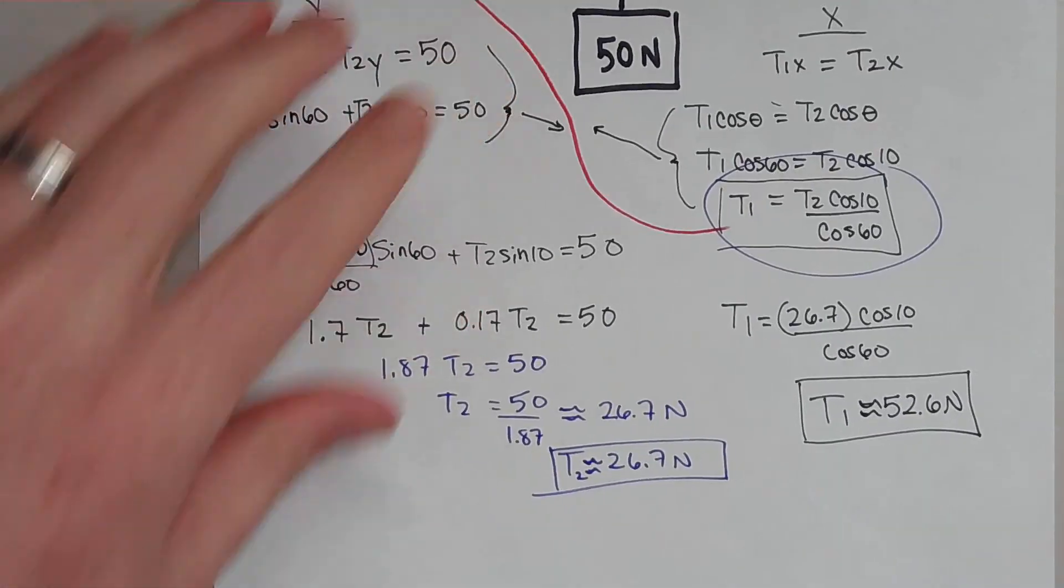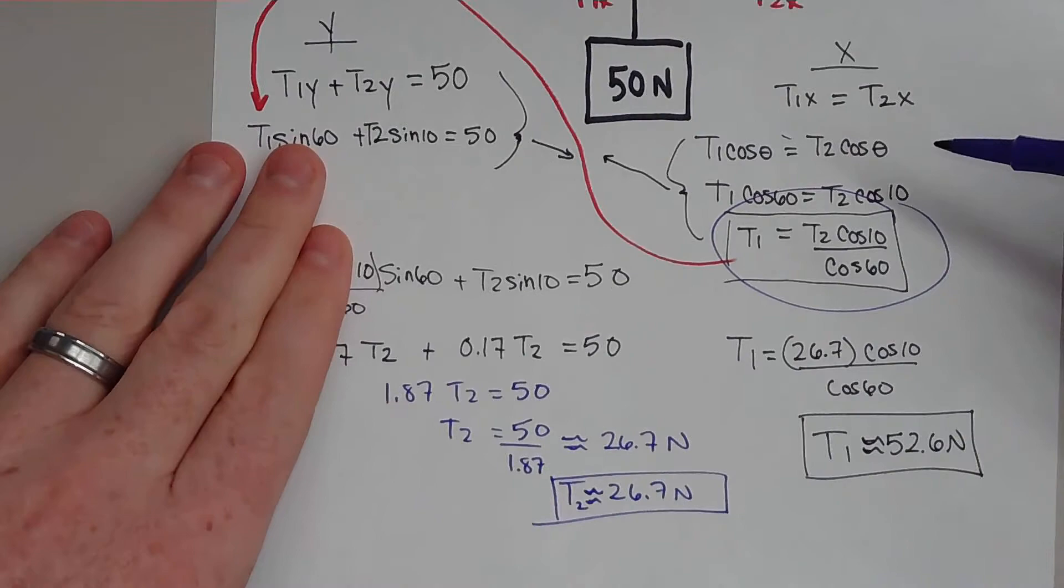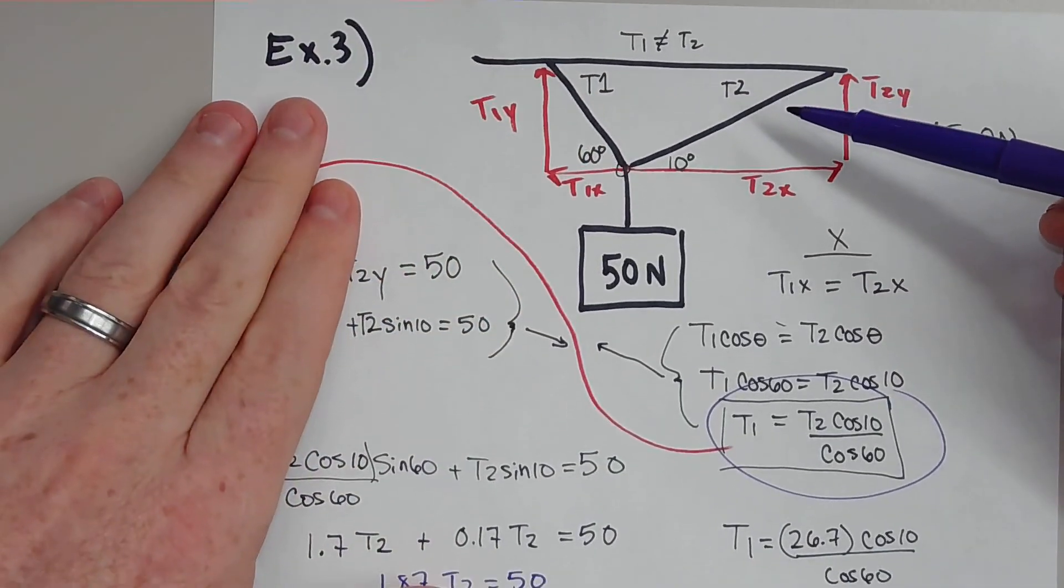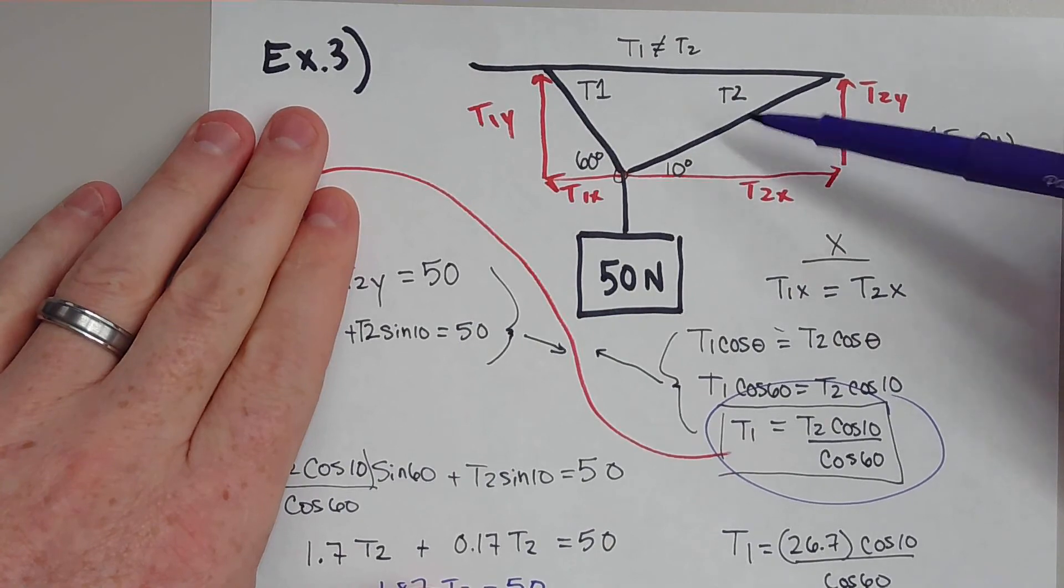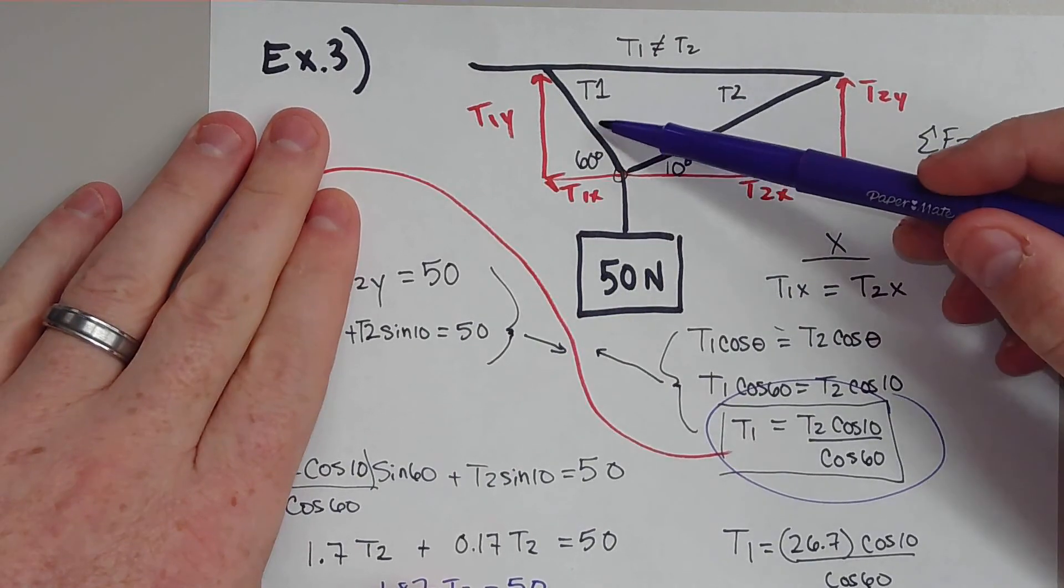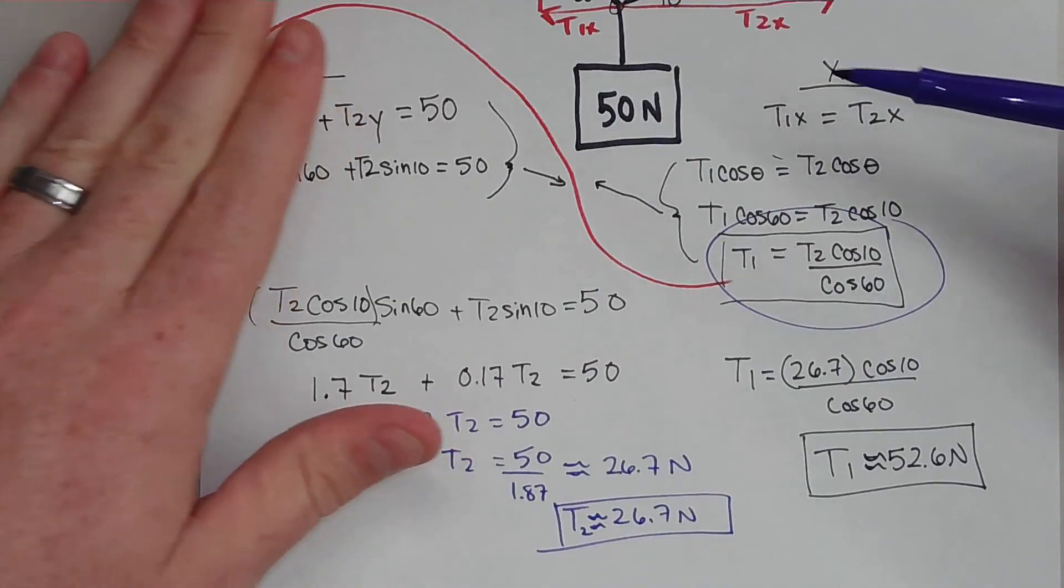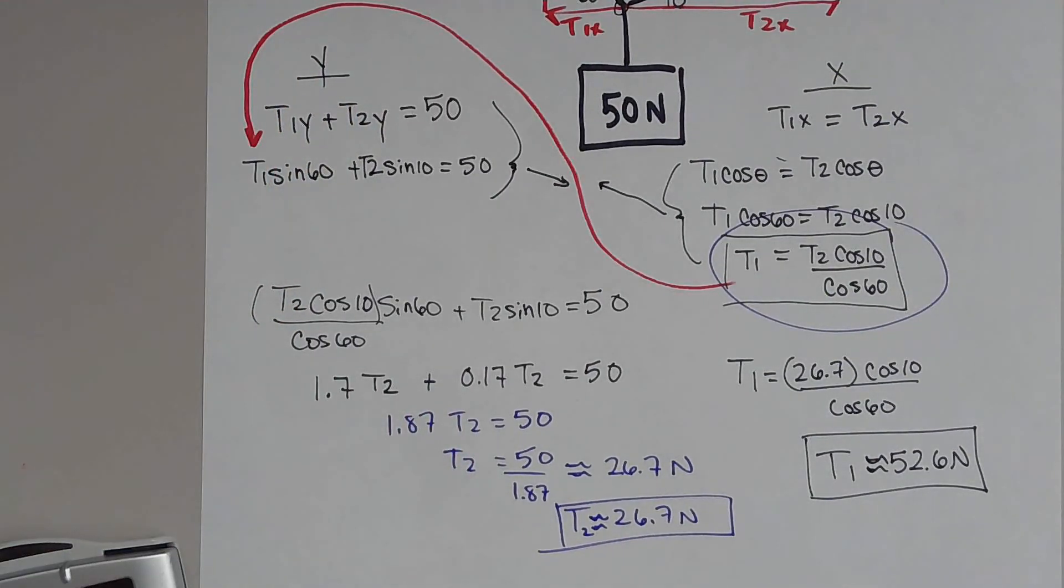And so we can see that these two tensions are definitely not equal, like we said before. Kind of interesting thing is the one that's the steeper usually has some more weight on it, but not always. This is a more complex problem that you would see probably on the free response question or a very hard question on your general physics test. And I hope these help. If you do, please consider subscribing for some more spicy math and great physics content. Thank you. Have a great day.